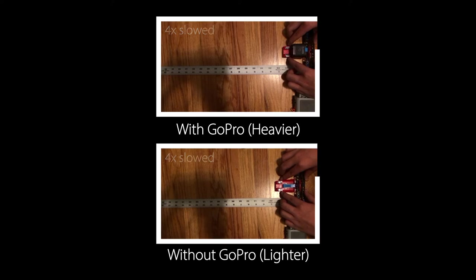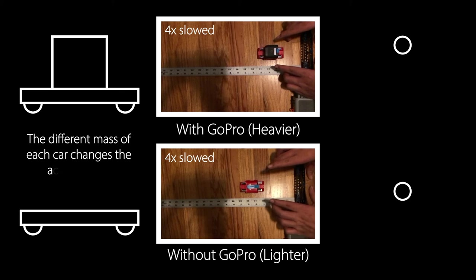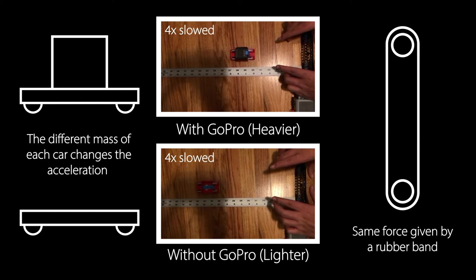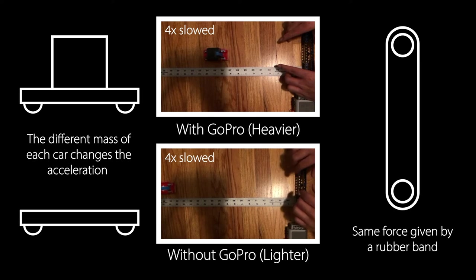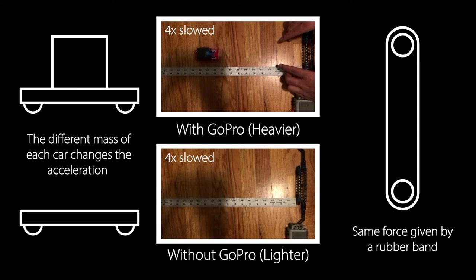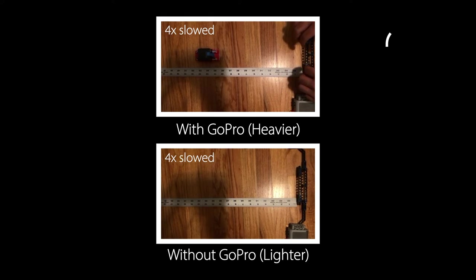An example of this are these two cars. One has a GoPro in it and the other does not, and they are being sent forward by the same force using a rubber band. The car with the GoPro on it can be seen with less acceleration than the car without one.